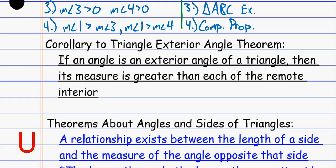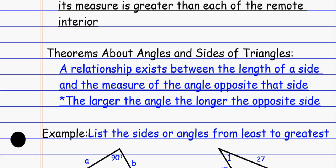The corollary says: if I have an exterior angle, then that angle has to be bigger than either of the remote interior angles. We know the exterior angle equals the sum of the remote interiors, and now we can also say it's bigger than either of those. Using those same exterior angles, we can also prove the relationship between the size of the angle and the opposite side. Theorems about angles and sides of triangles: there's a proportional relationship where the larger the angle is, the longer the opposite side is. The biggest side is always across from the biggest angle; the smallest side is always across from the smallest angle.